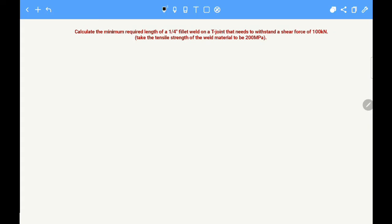Welcome to another video, this one is about calculating the strength of welds, specifically a fillet weld under shear force. Looking at the question, we need to calculate the minimum required length of a quarter inch fillet weld on a T-joint which needs to withstand a shear force of 100 kilonewtons. We know the tensile strength of the weld is 200 megapascals.